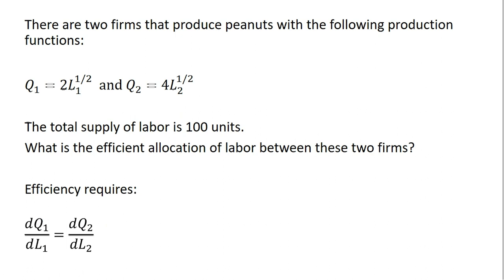Efficiency will require this condition. On the left-hand side, we have the marginal product of labor for firm one, and that will equal the marginal product of labor for firm two. So these are just taking the derivative of firm one's production function and setting that equal to the derivative of firm two's production function.